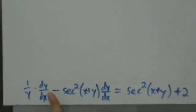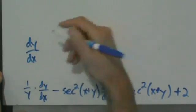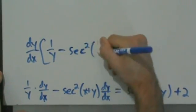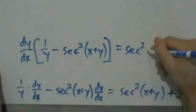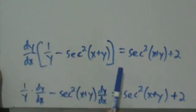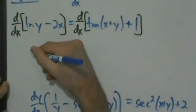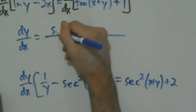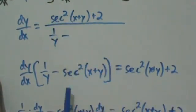Now we can factor out dy/dx. What's left in the parentheses is 1 over y minus secant squared of x plus y. So: dy/dx times (1 over y minus secant squared of x plus y) equals secant squared of x plus y plus 2. Now divide both sides by that whole expression, and dy/dx equals secant squared of x plus y plus 2, all divided by 1 over y minus secant squared of x plus y.